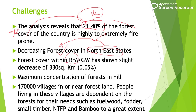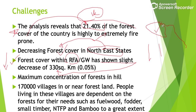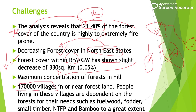The forest cover within recorded forest areas in the North East has shown a slight decrease of 330 square kilometers. India's majority forest is concentrated in the Himalayas, North Eastern states, and Western Ghats — all hilly regions. Plains lack sufficient forest cover and need attention. Additionally, there are 1,70,000 villages in India that are either near or within forests, and their populations are completely dependent on forests for fuel wood, fodder, and small timber — which is a concern.